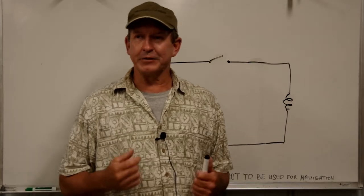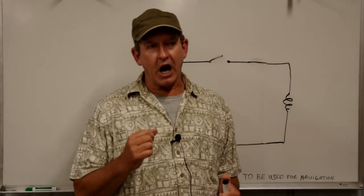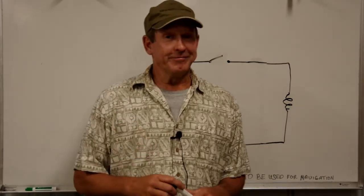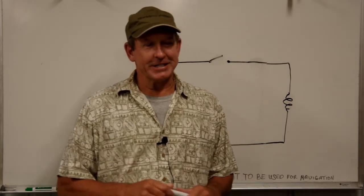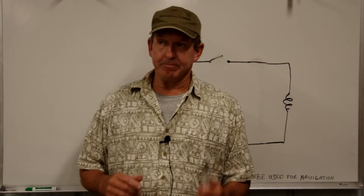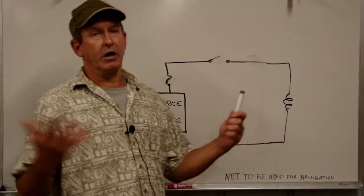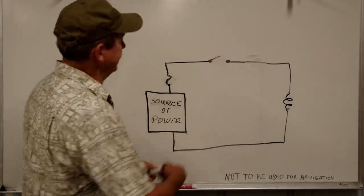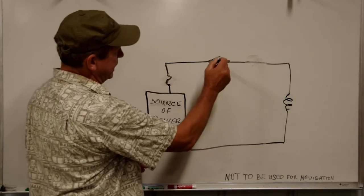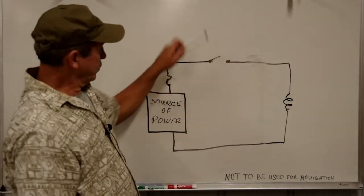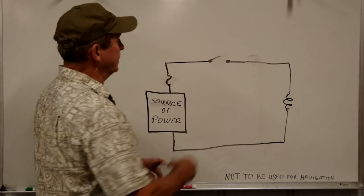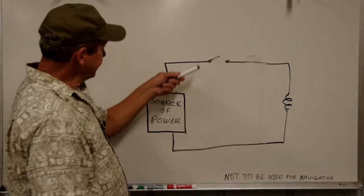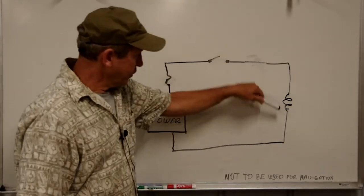Now let's talk about probably the most common electrical problem out there — the unwanted open. When we open a circuit, we have stopped power from flowing. Just like in our basic circuit — we have opened our switch, we've turned power off. Nothing can flow because our switch is open. This is a wanted open — we wanted this to happen, we wanted to turn off our device.